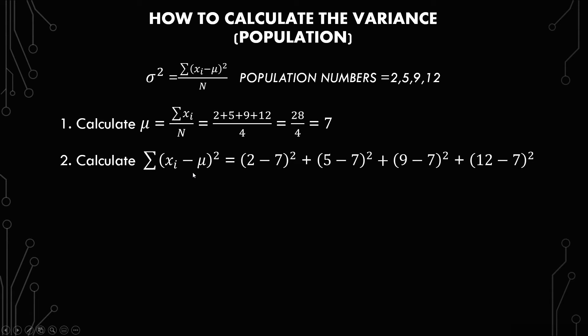The next thing you need to do is calculate the summation of each x minus mu squared. So we've got to take 2 minus 7 squared and then the 5 minus 7 squared and then 9 minus 7 squared and then 12 minus 7 squared and then add them all up.